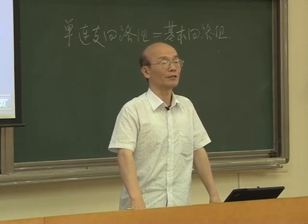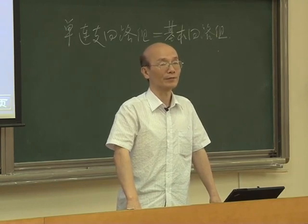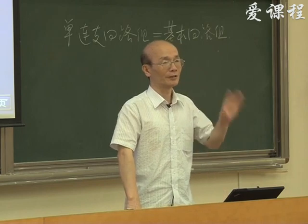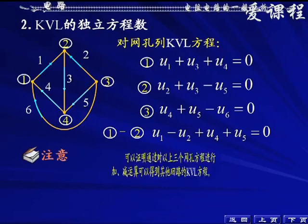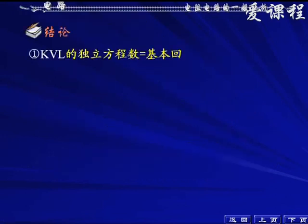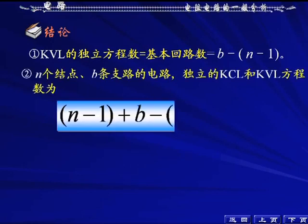这例子告诉我们：要么按网孔来列方程，要么按基本回路来列方程。特别强调，按网孔来列KVL方程只能适合于平面电路；对于非平面电路最好按基本回路（单连枝回路）来列方程，因为选其他独立回路非常难选。我们可以证明：通过对网孔方程进行线性运算可以得到其他回路的KVL方程，但这些方程都是多余的。结论：KVL方程的独立数等于基本回路数，即B - (N-1) = B - N + 1。